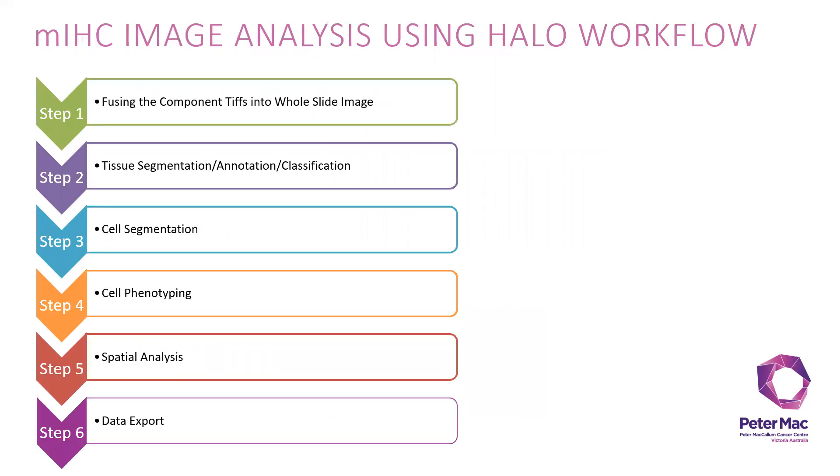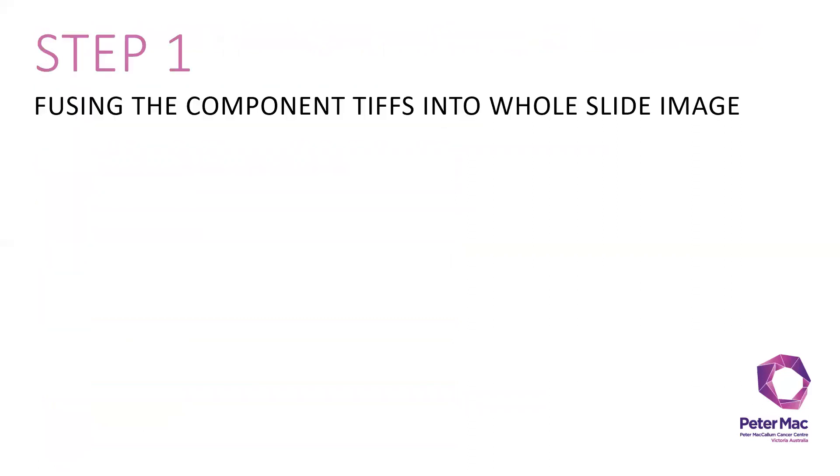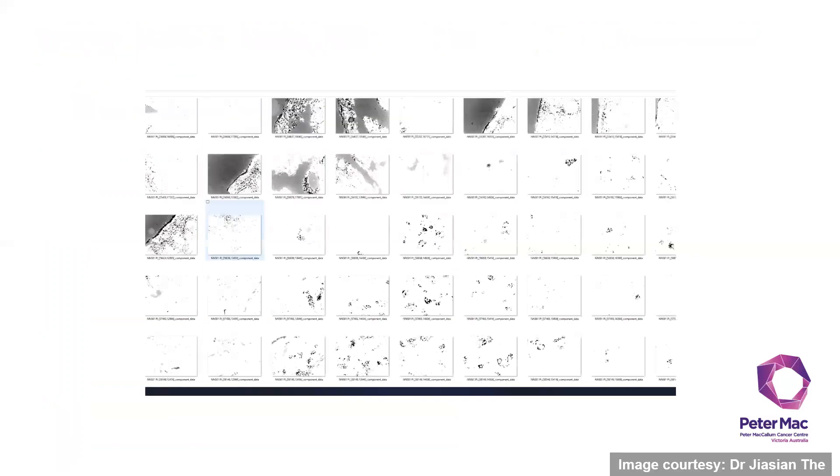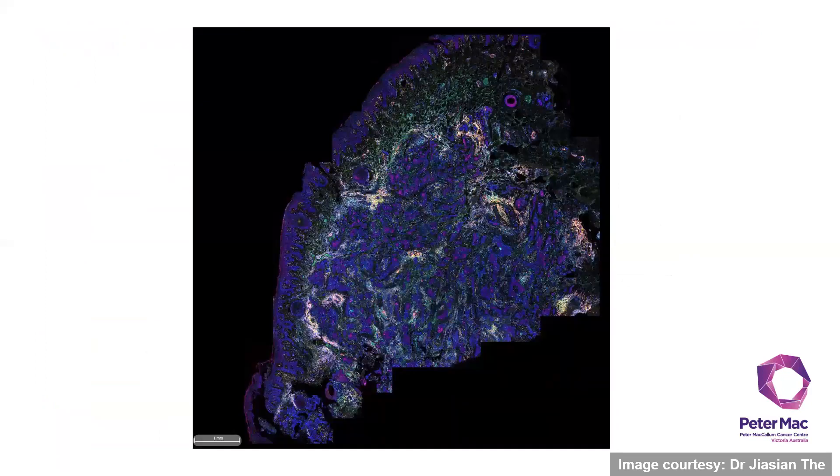Here's a brief workflow when you are analyzing your Opal images using HALO, which I will go through step by step. First is to fuse the component TIFFs into whole slide image. After you unmix and process your images in Inform, you will then have to export them into component TIFFs. These individual TIFFs can then be fused into the whole tissue image in HALO.